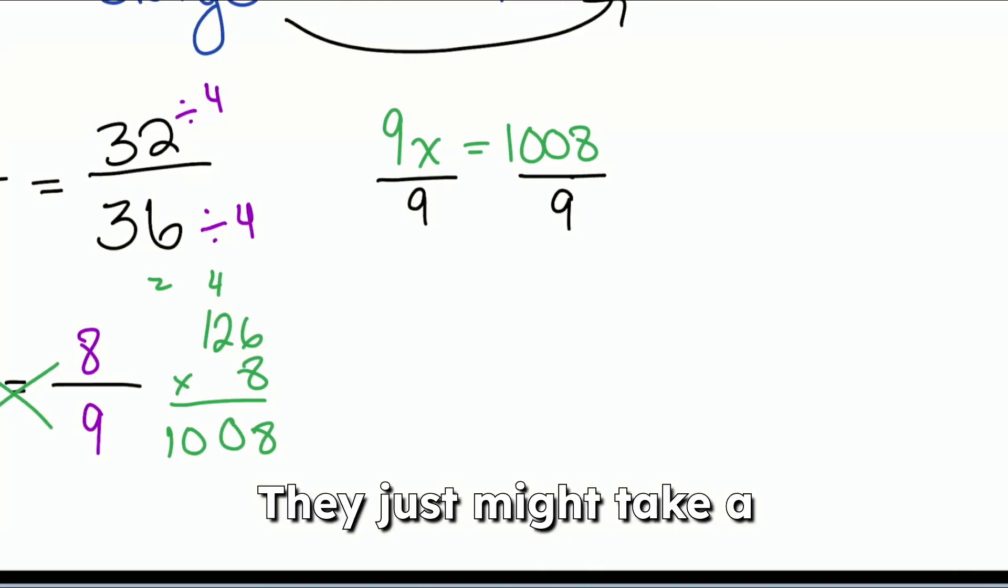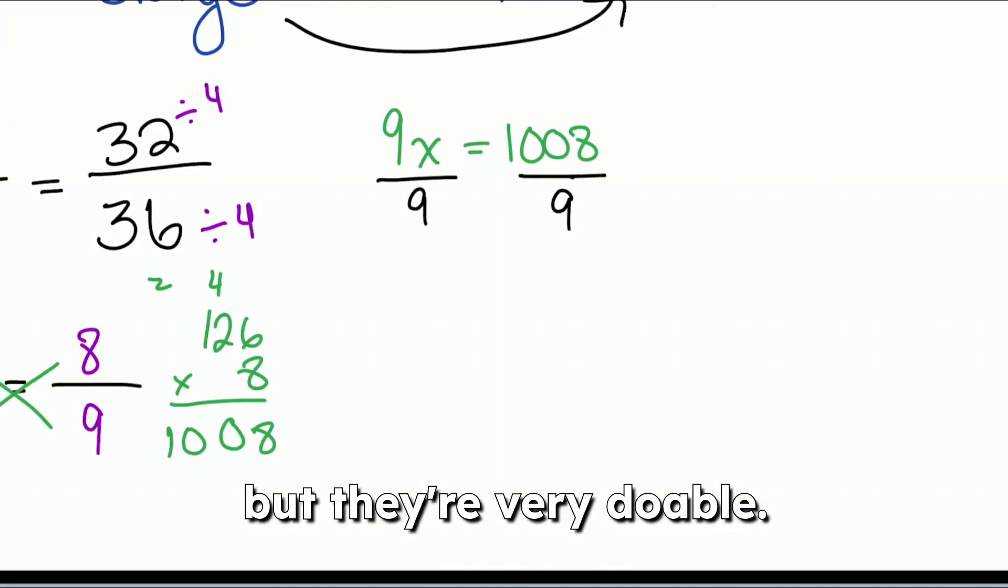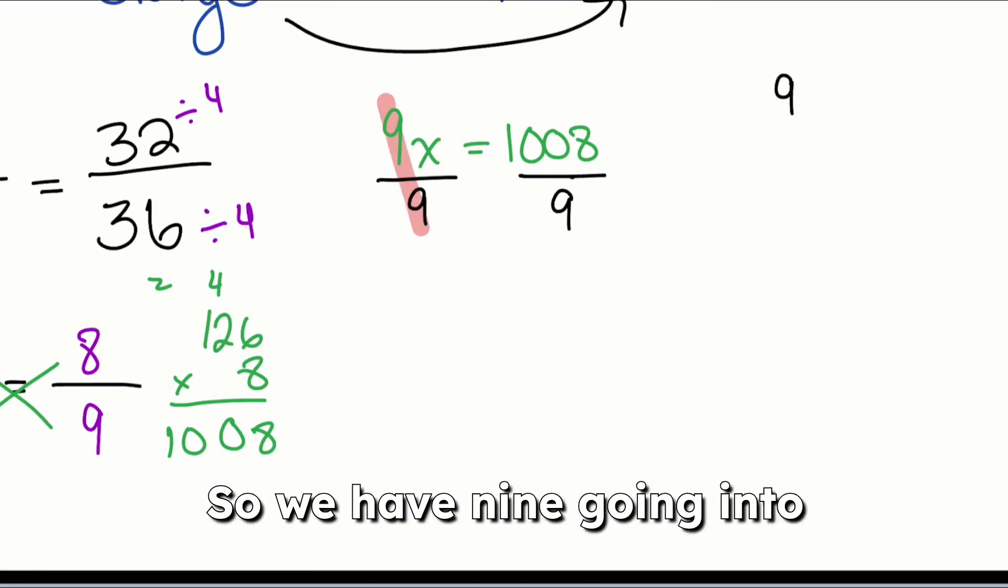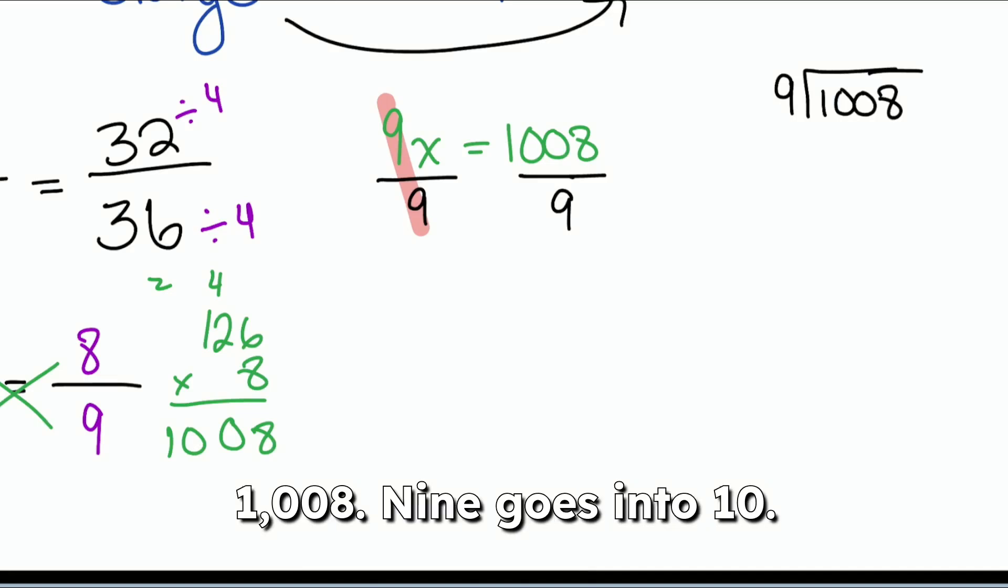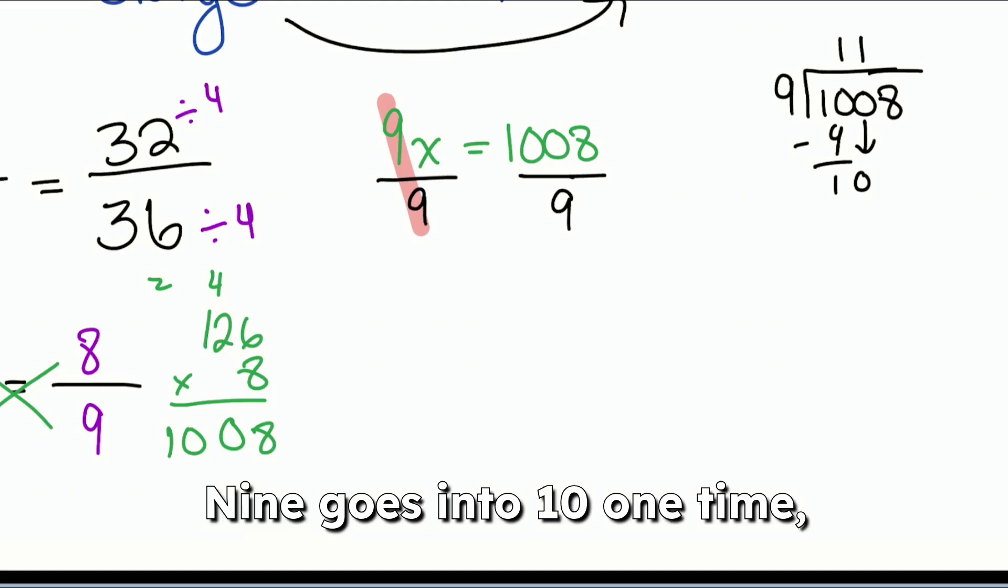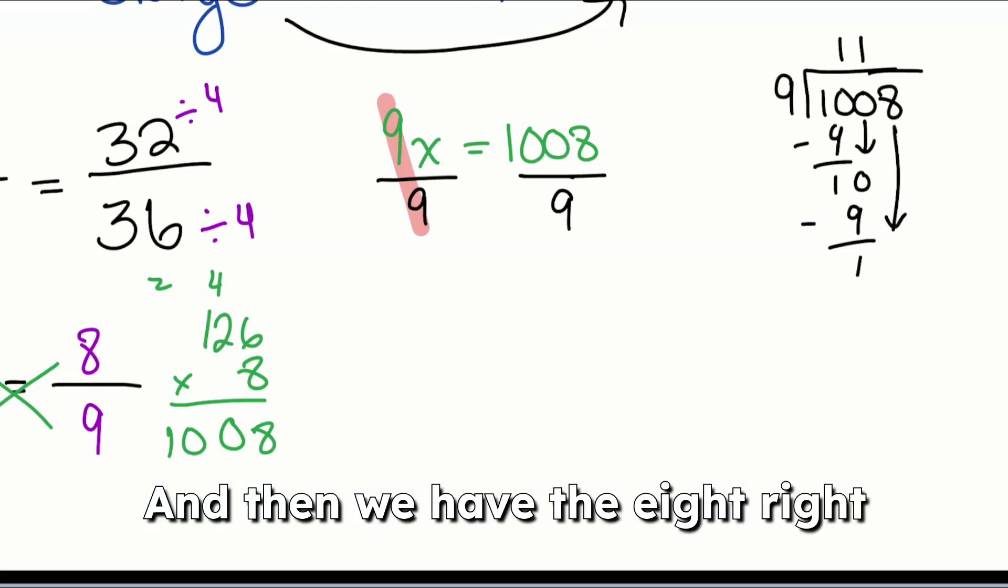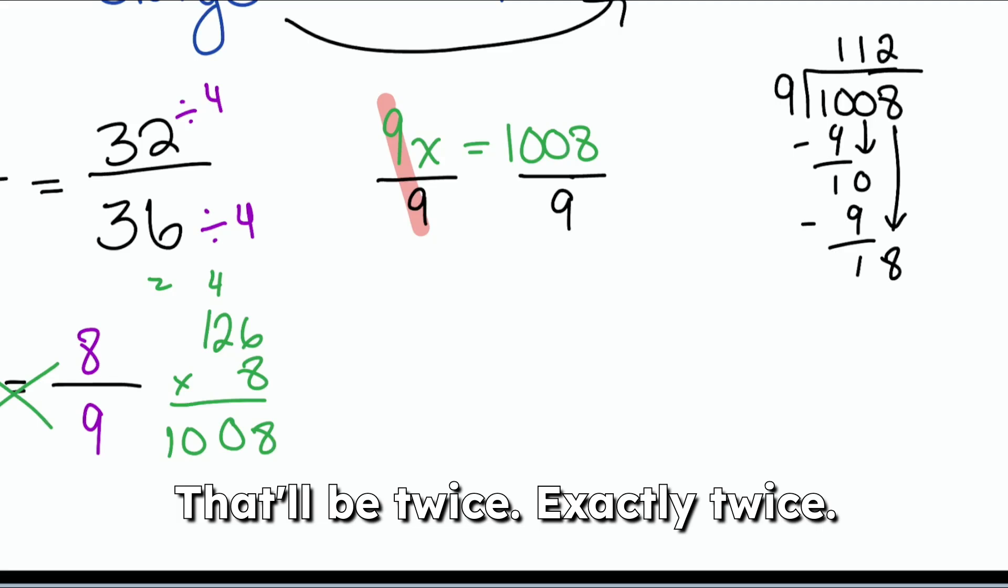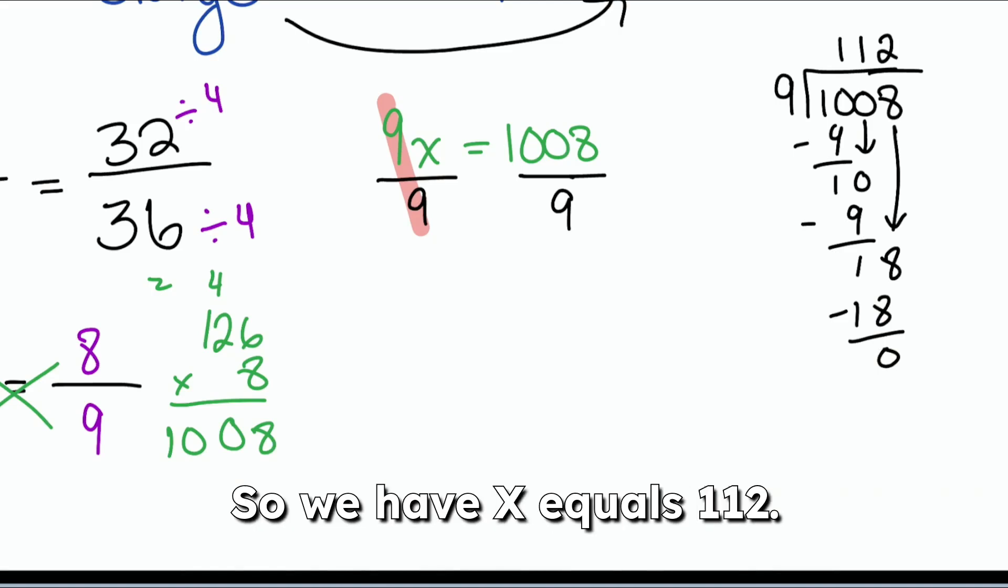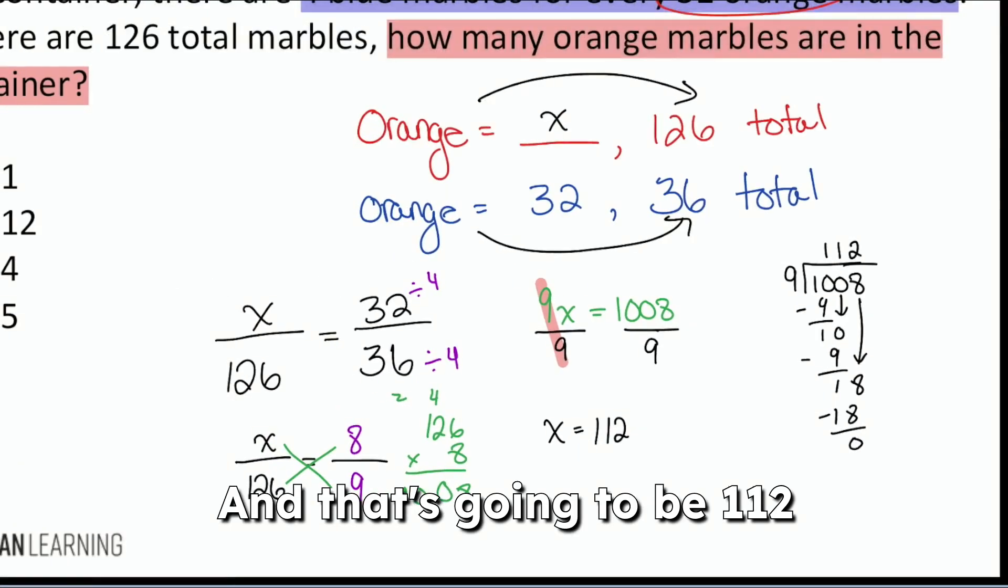Notice that these steps are doable. They just might take a couple of seconds, but they're very doable. And that's the good thing about all of these questions that you'll be facing. So we have nine going into 1008. Nine goes into 10 just one time, leaving a one. Same thing. Nine goes into 10 one time. Leave that one. And then we have the eight right here. Nine goes into 18. That'll be twice, exactly twice. And we are done just like that. So we have X equals 112. And that's going to be 112 orange marbles in this lot.